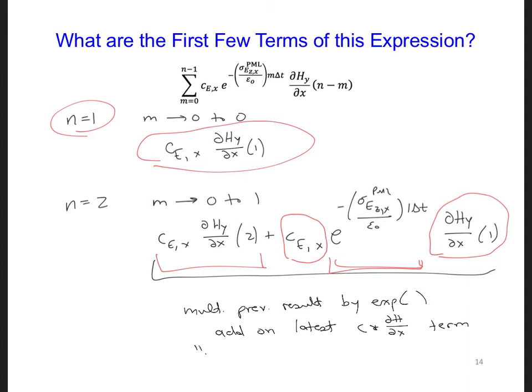This is called a recursive convolution technique. The fact that we can use the result that was previously calculated and just keep multiplying and adding on to it, so that we don't have to store the value over all the previous time steps, we can just iteratively keep adding and multiplying on to that value.